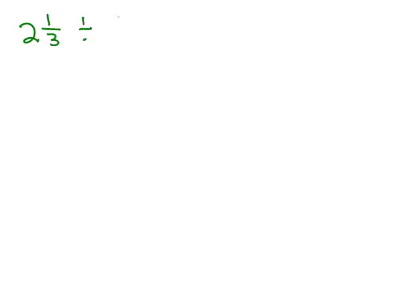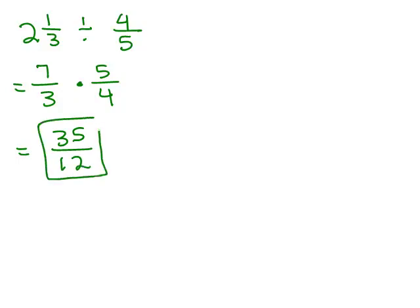How about if we have a mixed number — like 2 and 1 third divided by 4 fifths? In this case, I have to first write each as an improper fraction. 4 fifths is okay as is. 2 and 1 third becomes 7 thirds, because 3 times 2 plus 1 equals 7. Then I multiply by the reciprocal, which is 5 fourths. I can't cancel anything, so that's 35 twelfths. If you want to write this as a mixed number, 35 divided by 12 is 2 and 11 twelfths.